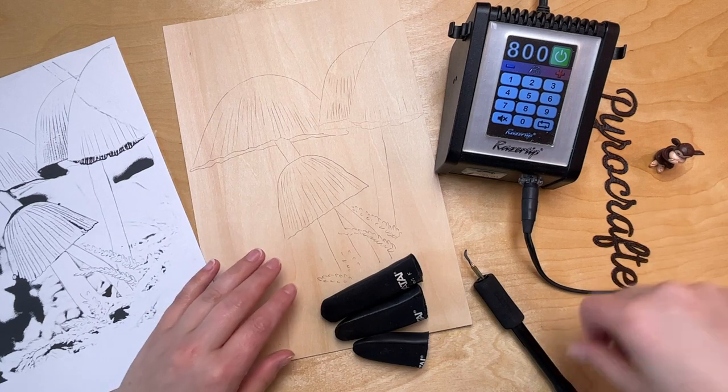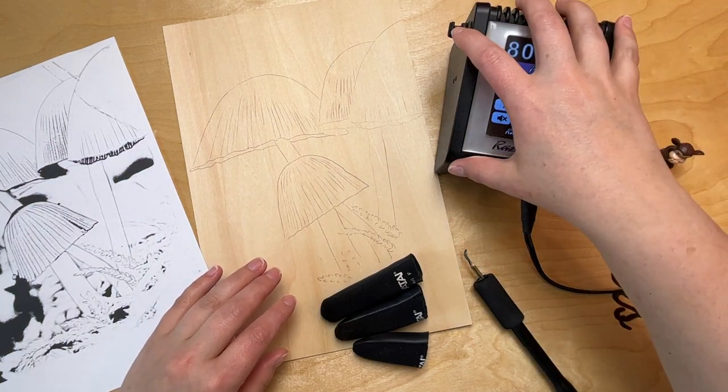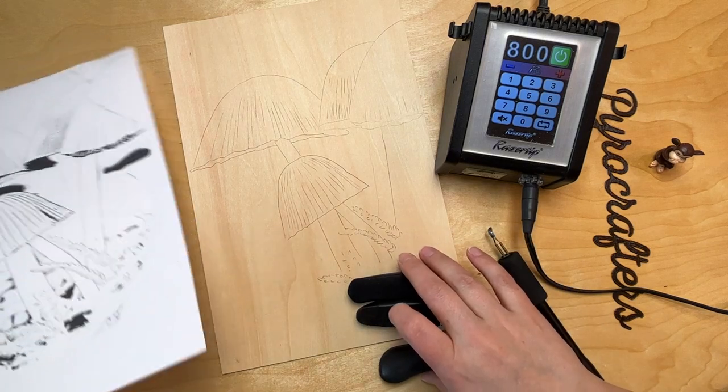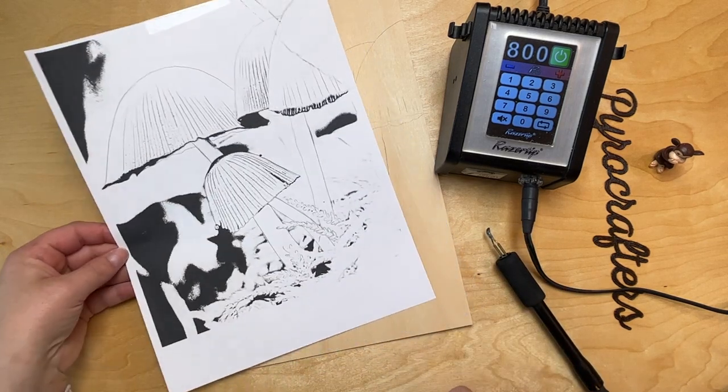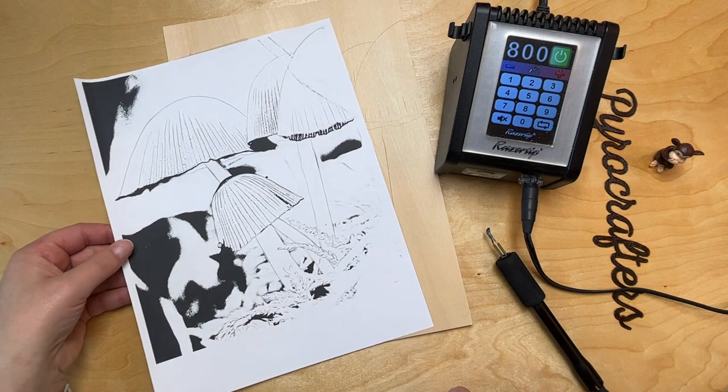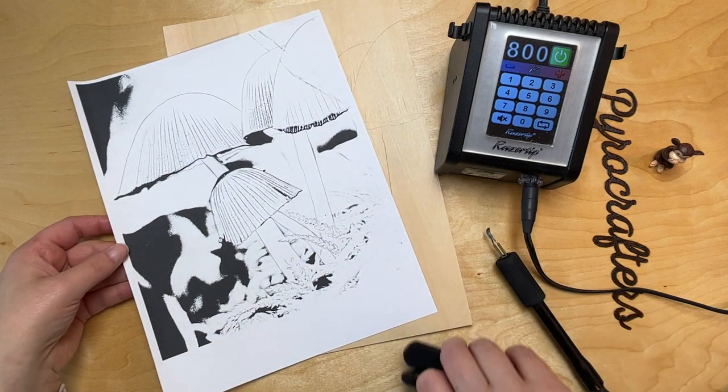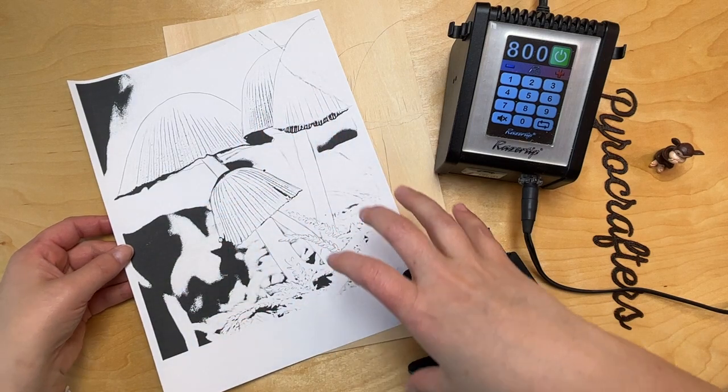We're going to be doing a lot of shading. I've got my Razertip P80 here, my shader tip, and my finger guards. This is the template I'm using. I pulled a picture from pexels.com—I'll put the link below.